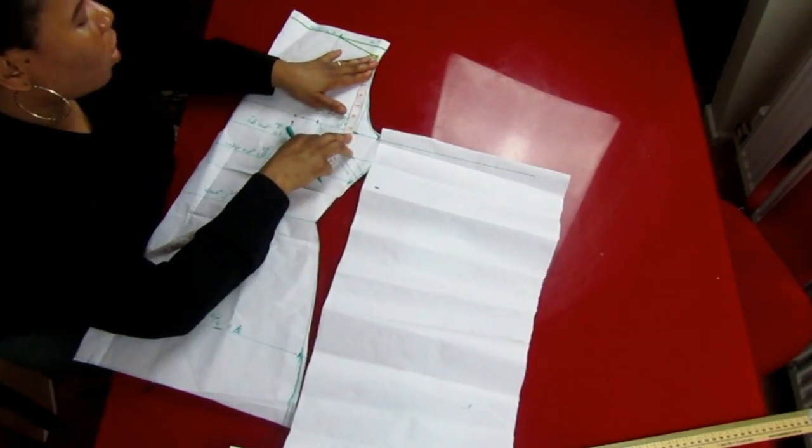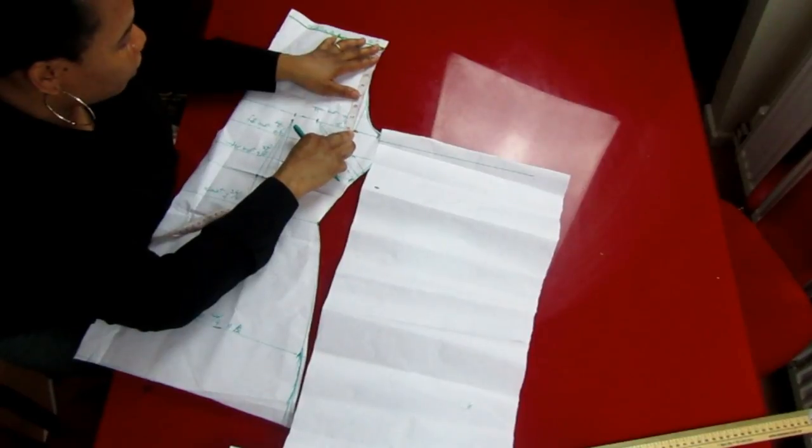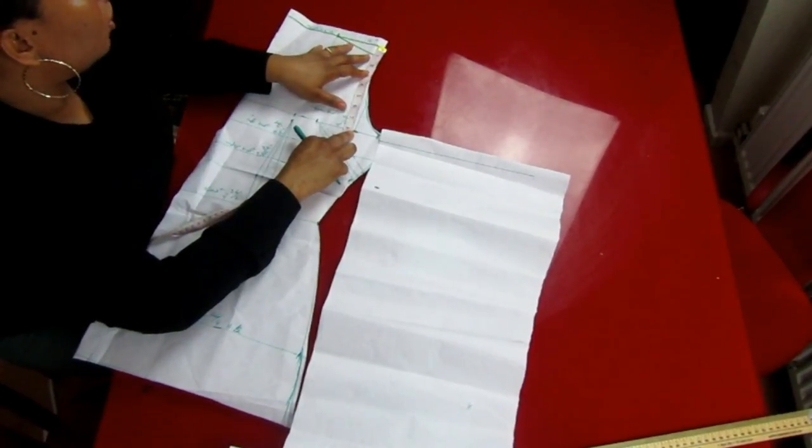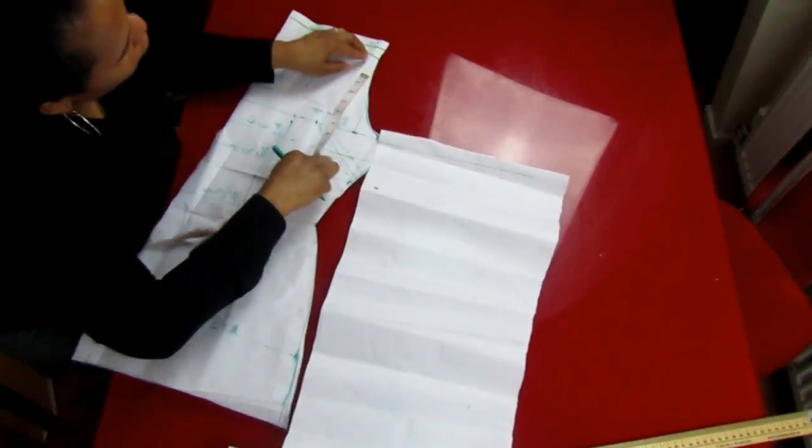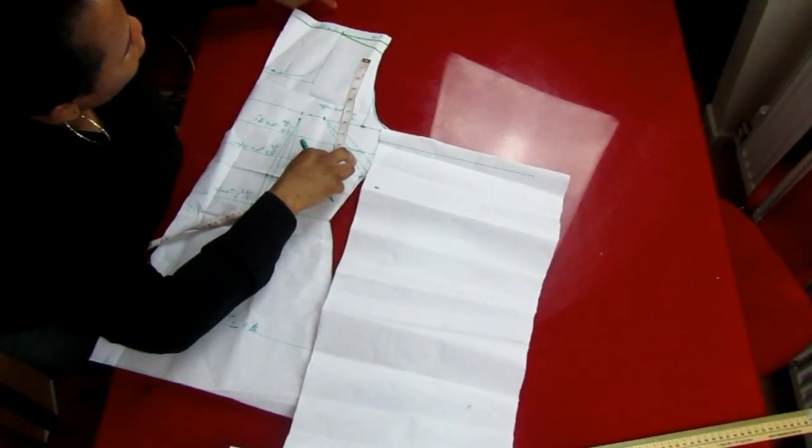So the armhole I'm working with is 8 inches right from the shoulder. So this place is 8 inches. So I made 1 inch slope here. So from here you measure your armhole because I'm going to be cutting this off.